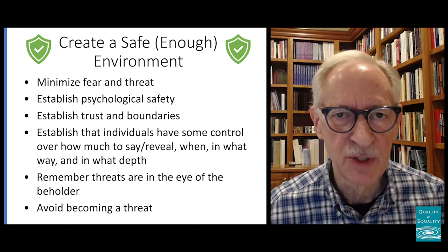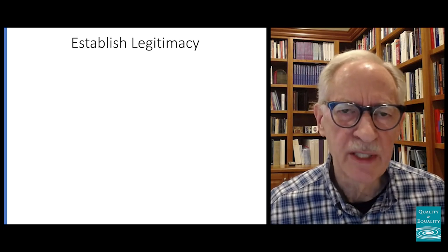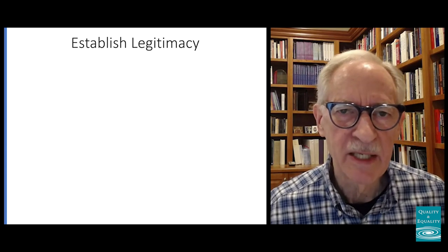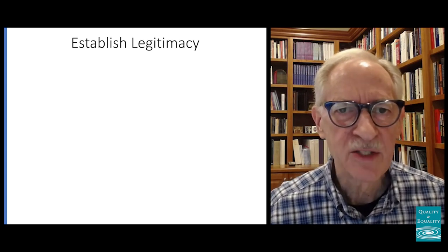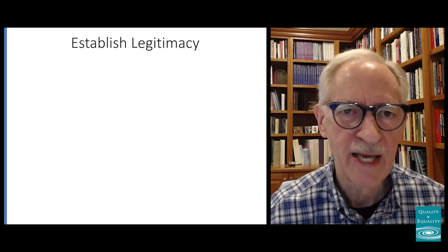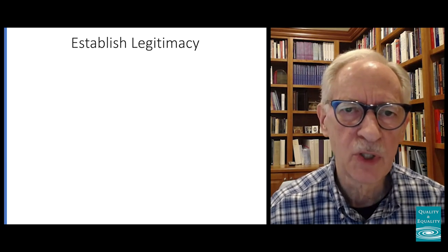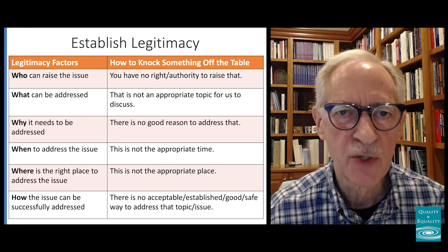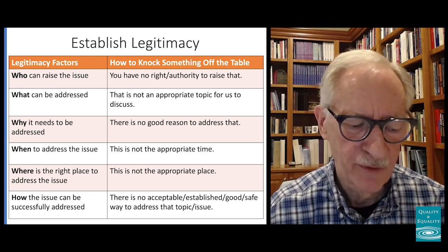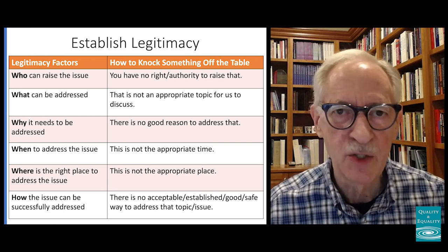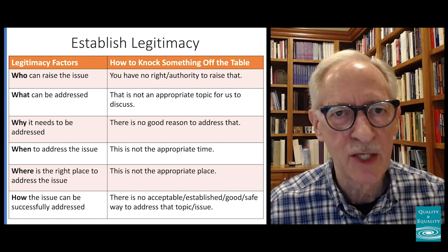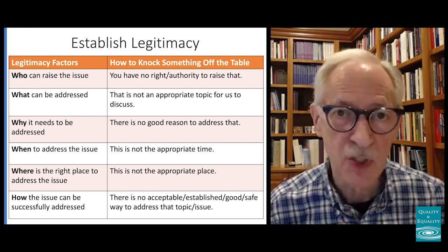The second item, in addition to safety, is legitimacy. One of the ways that people knock something off the table is by making it illegitimate — because by definition, things that are legitimate and appropriate can go on the table. If legitimacy is challenged, it gets knocked off. So for me there's always the who, what, why, when, where, and how of legitimacy, and you are trying to make each one of those legitimate. For example: who can raise the issue? 'Hey, you're not the right person — what do you know about that? Who made you the expert?' — we've now delegitimized your ability to raise the issue. So if not me, then who is legitimate? Who could I bring in to legitimately raise this so people have to engage it?